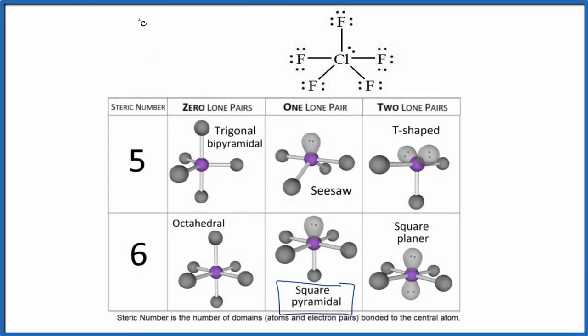We could also use what's called the AXE notation. So AXE, we have A as the central atom, that's the chlorine, X, that's the number of atoms. We said 1, 2, 3, 4, 5. And then E, that's the number of lone pairs. We have one lone pair. So AX5E1. You don't really have to write the one. And if you look this up, you're going to see again, this is a square pyramidal molecular geometry for ClF5.